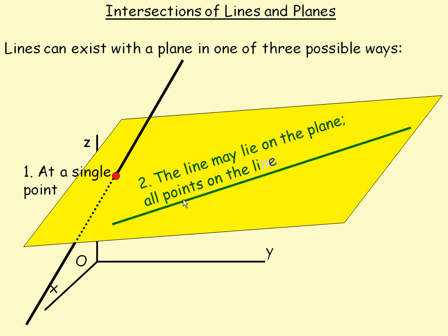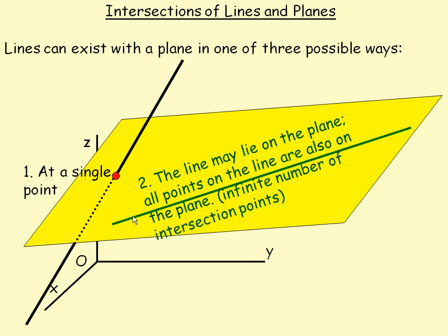It's possible that the line might lie on the plane, meaning every single point on the line is also on the plane. Notice that if you consider the direction vector for the line and the normal vector for the plane, in this scenario they would be perpendicular. So if you find the direction vector for the line is perpendicular to the normal of the plane, then the line might lay on the plane.